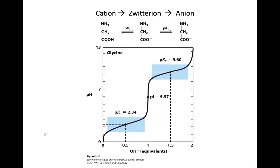So this is a titration curve of glycine, the simplest amino acid. Remember, glycine is the simplest one because there is no R group, so the alpha carbon has two hydrogens. There are two protonatable sites — one on the amino group, where there is a lone pair, and one on the carboxyl group, where there is also a lone pair.